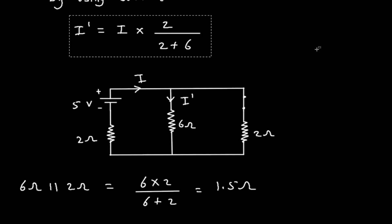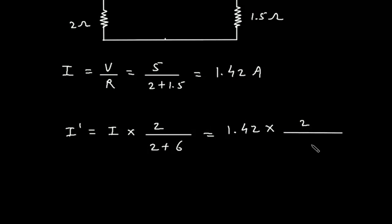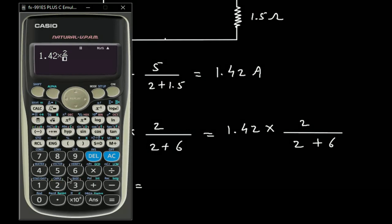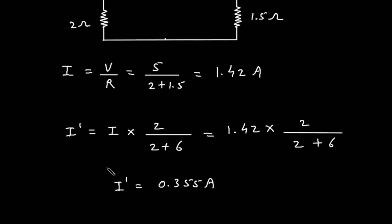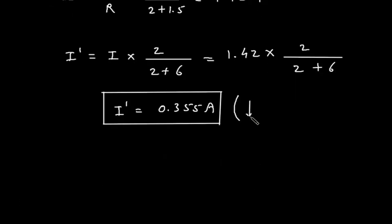Now we have the value of current I, so we can find I prime. I prime equals 1.42 into 2 divided by 2 plus 6, which gives 0.355 amperes. The direction of I prime is downward.